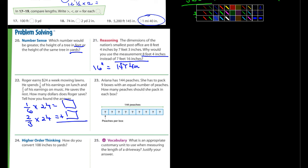23. Ariana has 144 peaches. She has to pack nine boxes with equal number of peaches. How many peaches should she pack in each box? Well, 144 divided by what? How many in each box? Nine. That'll tell you.